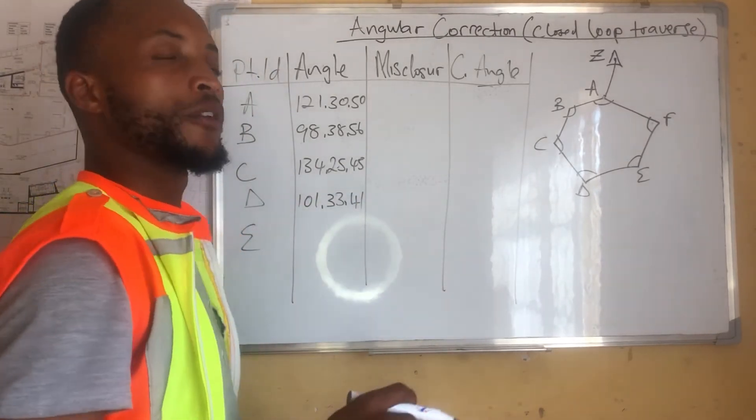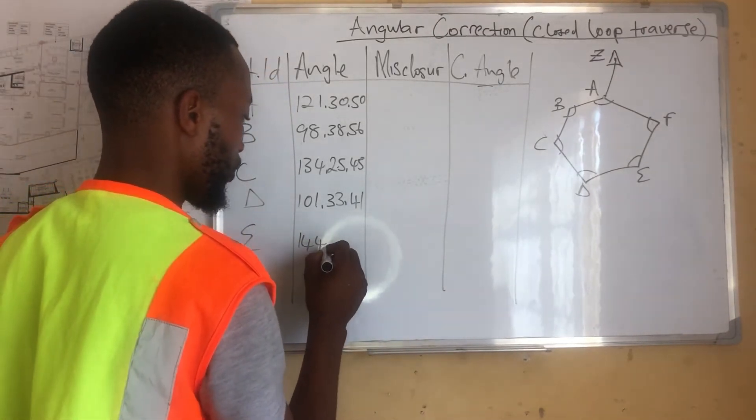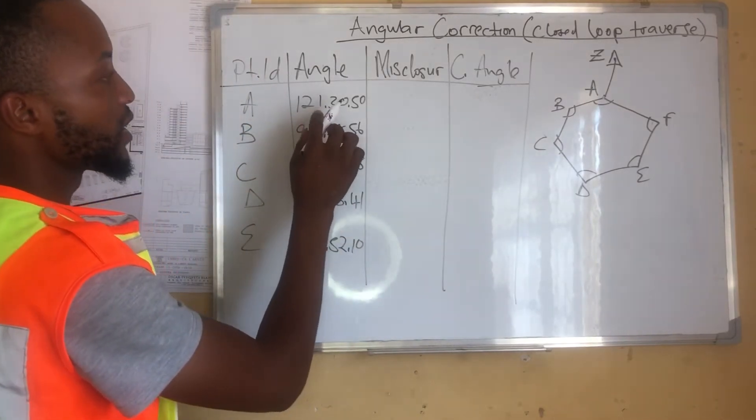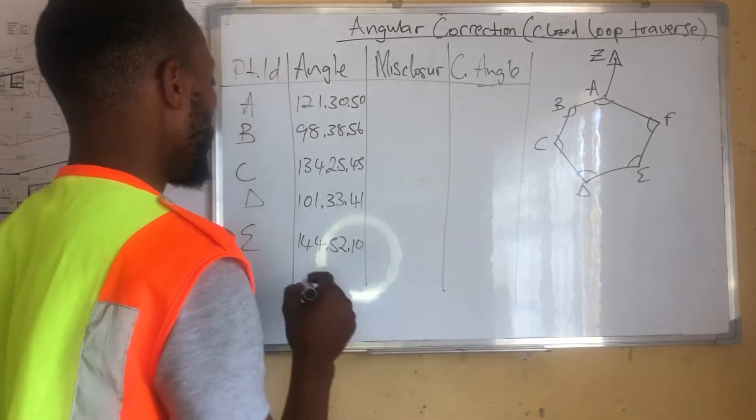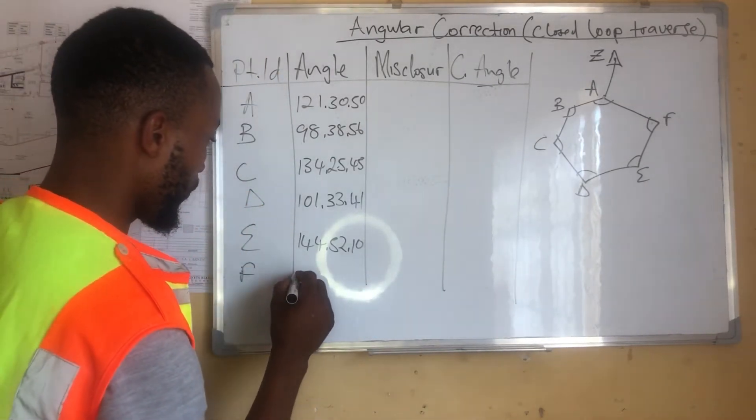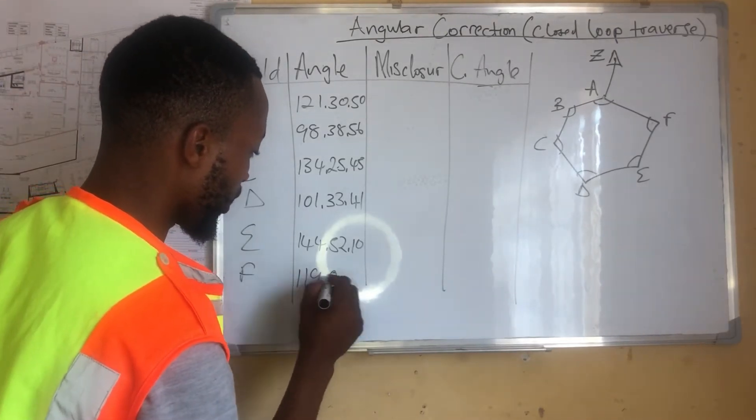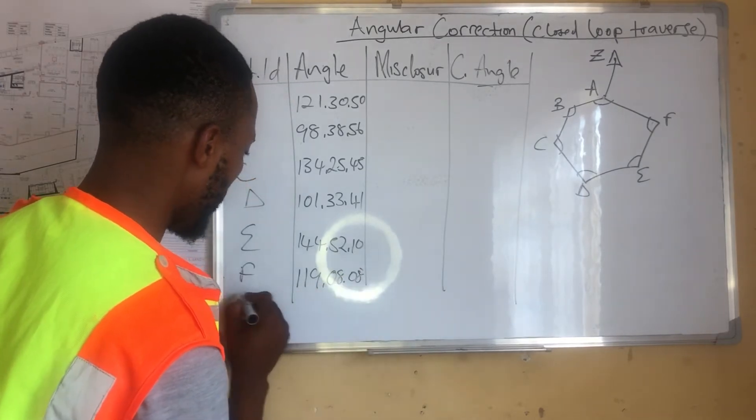Angle E, we have 144, 52, 52, 10. These are degrees, minutes, and seconds. Then for angle F, we have 119 degrees, 8 minutes, 8 seconds.